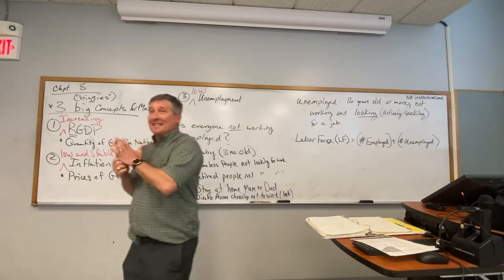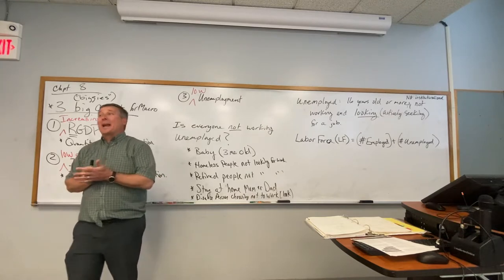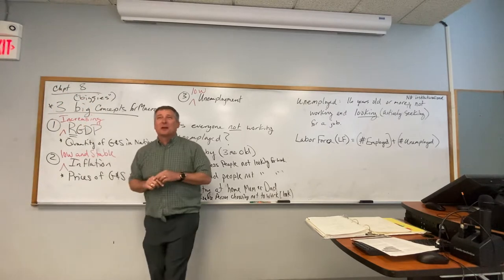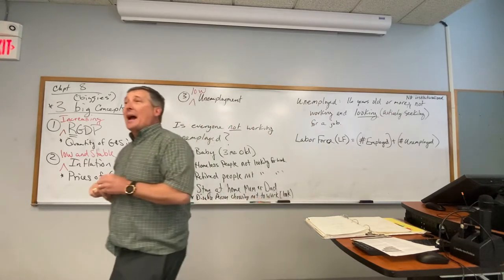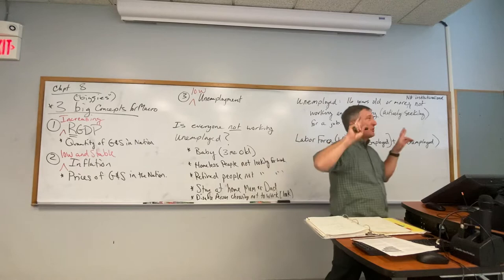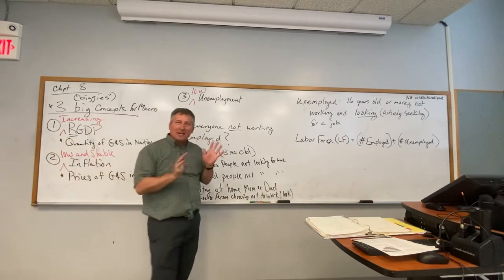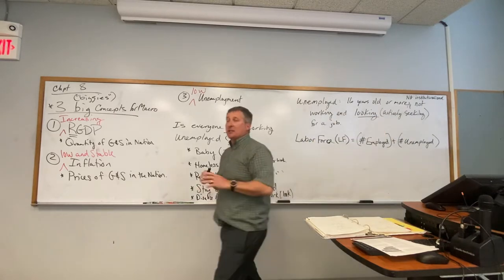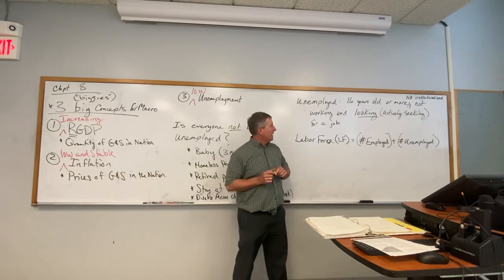Does anybody know what the unemployment rate is currently in the United States? We approached 20% during COVID because the government forced people to lose their jobs — all the restaurant workers. But right now it's about 3.8 or 3.9. We've actually recovered back to about where we were pre-COVID. The unemployment rate is at really some historical lows still. From an economist standpoint, I suspect it's not going to stay there, unfortunately.